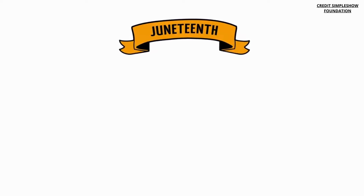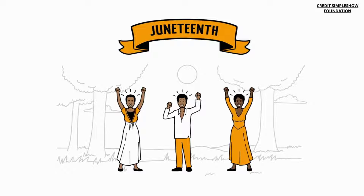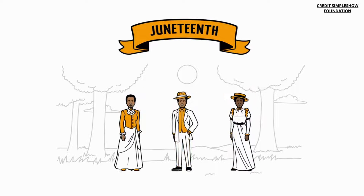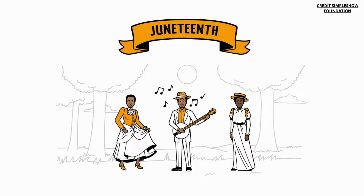The following year on June 19th, the first official Juneteenth celebrations took place in Texas. The newly freed African Americans celebrated by dressing up nicely — something they were not allowed to do as slaves — and singing spirituals, dancing, and reading the Emancipation Proclamation aloud.